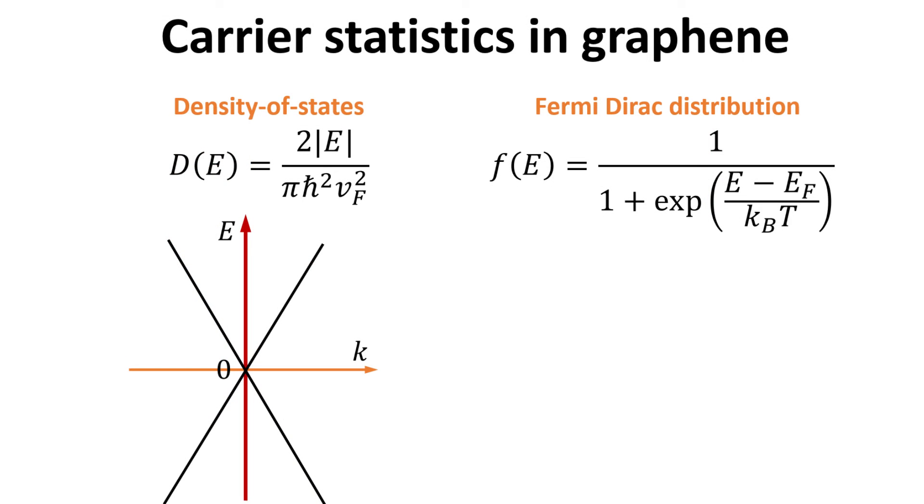To model the carrier statistics in graphene, we would need the electronic density of states, D, and the Fermi-Dirac distribution function, F, as shown.